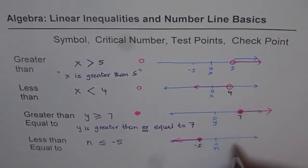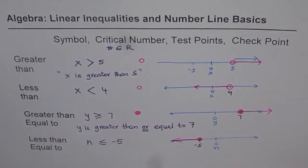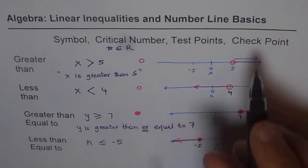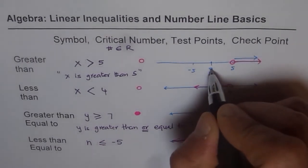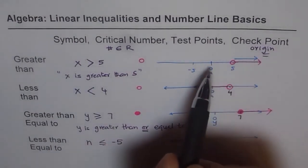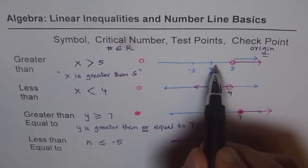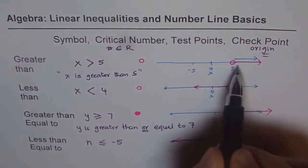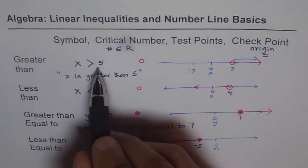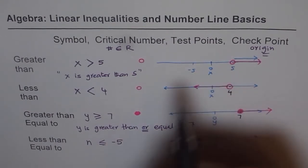Every point on a number line belongs to the set of real numbers, so our variables represent real numbers. Once we draw the solution, we should check it using the origin. Replace the variable with 0. For x greater than 5: is 0 greater than 5? False — so 0 is not part of our solution, and our number line points to the other side. That confirms it is correct.